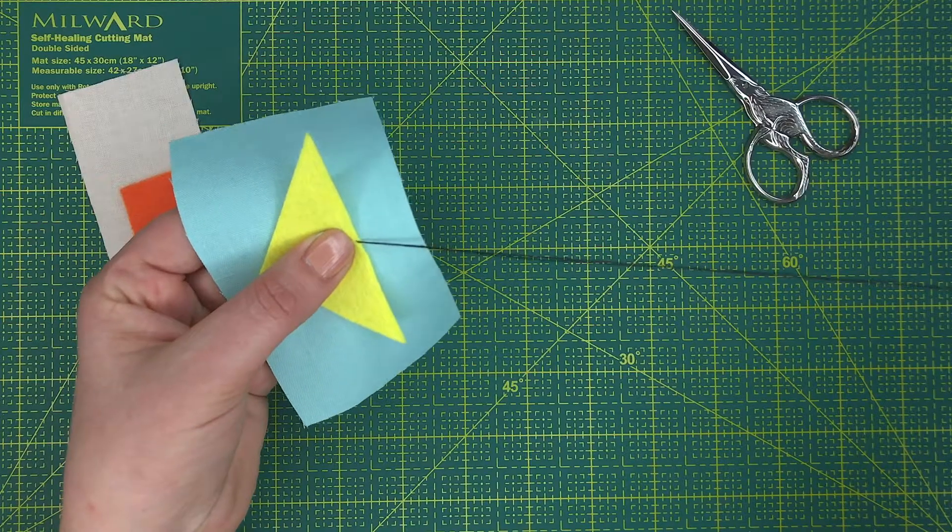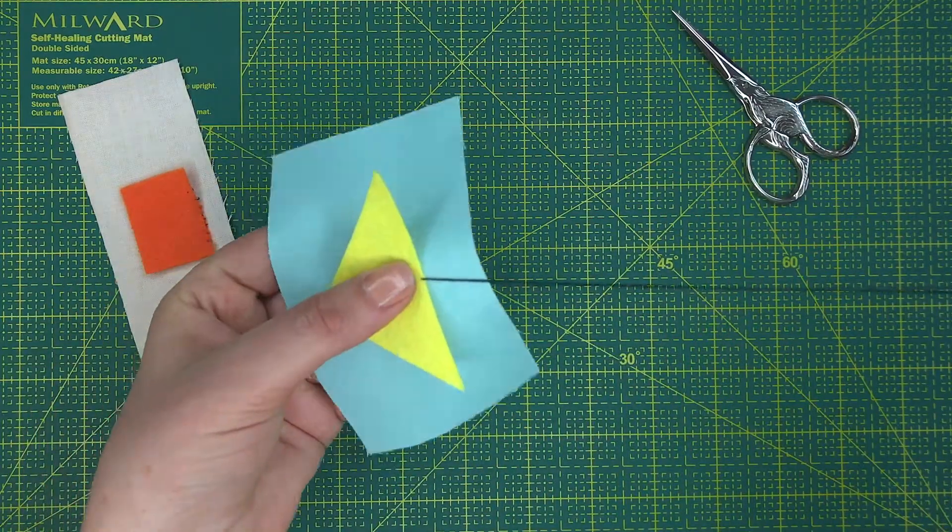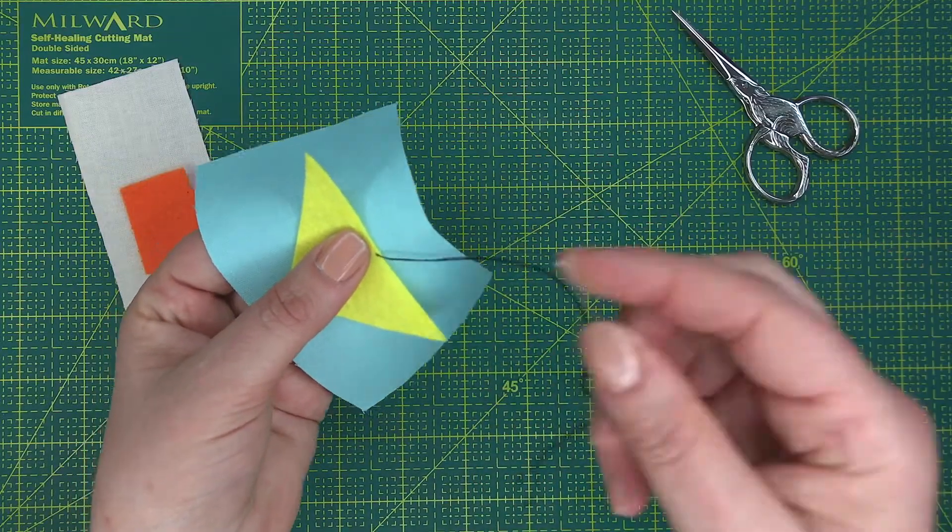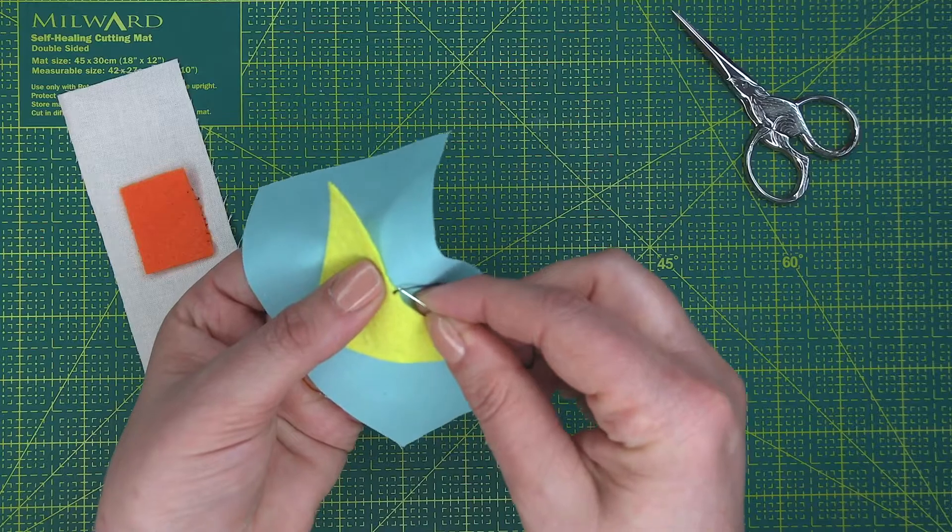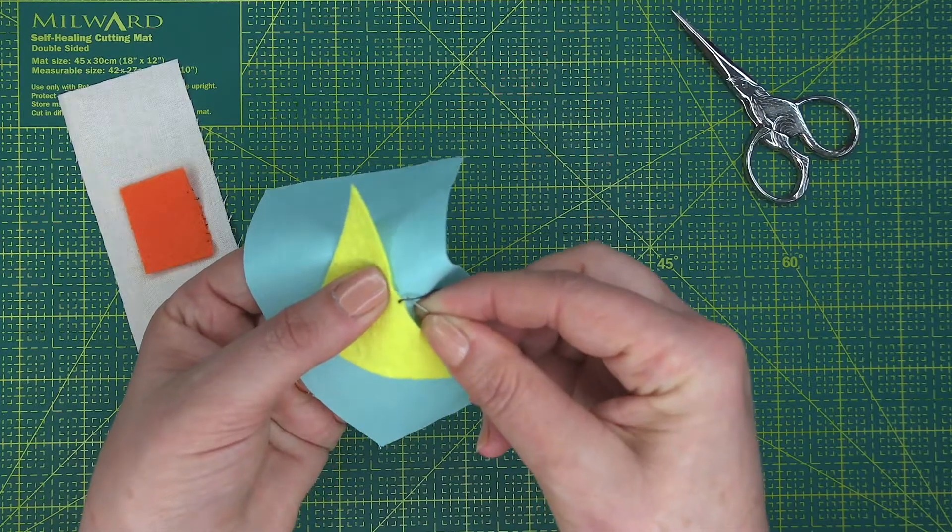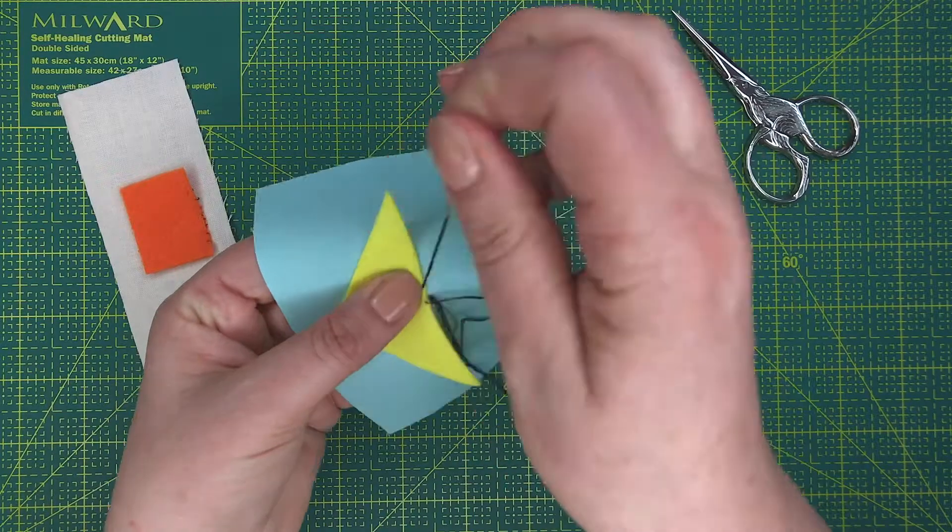Then, working very close together, you pick up a small piece of the blue material and work the needle at an angle back into the yellow felt.